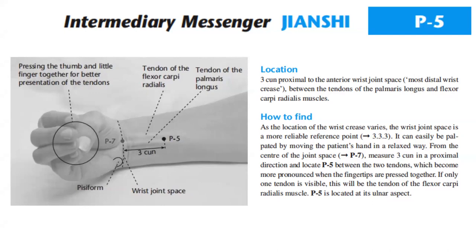How to find Pericardium 5? As the location of the wrist crease varies, the wrist joint space is a more reliable reference point. It can easily be palpated by moving the patient's hand in a relaxed way from the center of the joint space at Pericardium 7, then measure 3-cun in a proximal direction, and locate PC5 between the two tendons, which become more pronounced when the fingertips are pressed together. If only one tendon is visible, this will be the tendon of the flexor carpi radialis muscle; PC5 is located at its ulnar aspect.